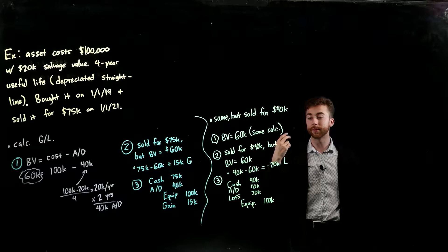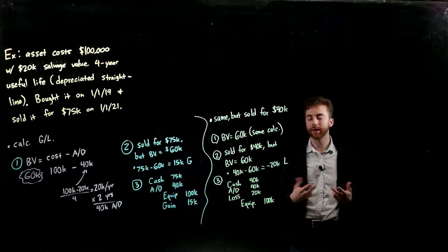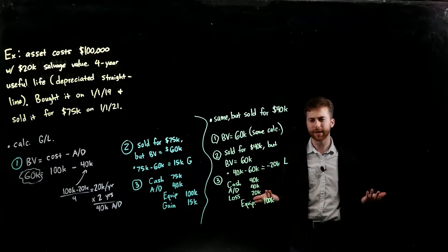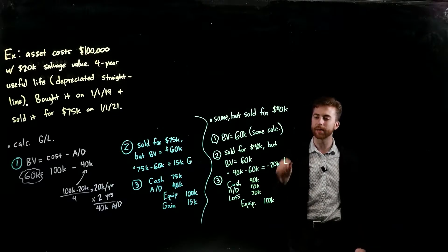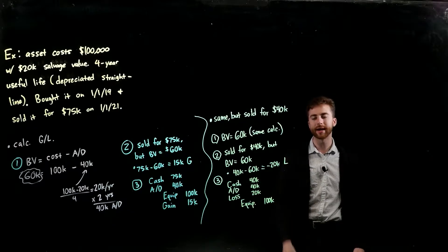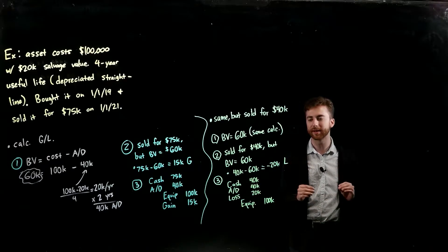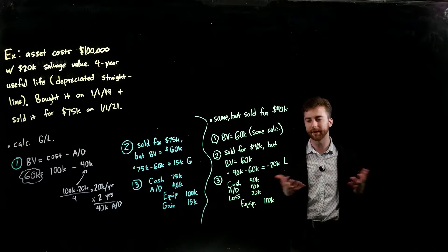Then for number two, we sold it for $40,000 this time. Well, if it was worth $60,000 on my books and I was only able to sell it for $40,000, then I take my selling price of $40,000, subtract out my book value of $60,000, and I'm in the hole. I'm negative by $20,000. So that's a loss because I was only able to sell it for $20,000 less than what it showed up on my books, the book value of it.